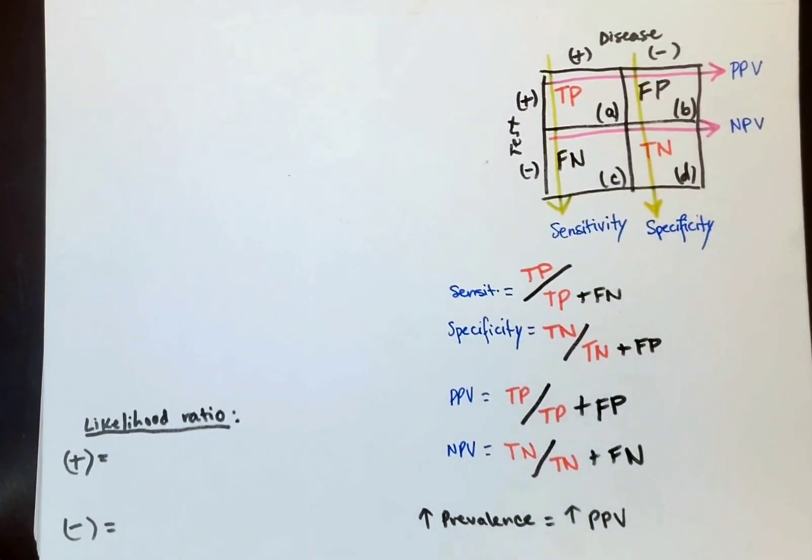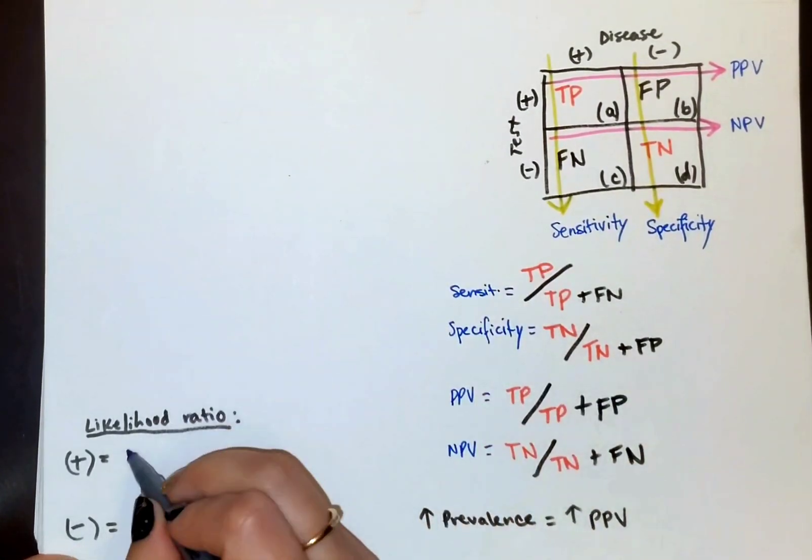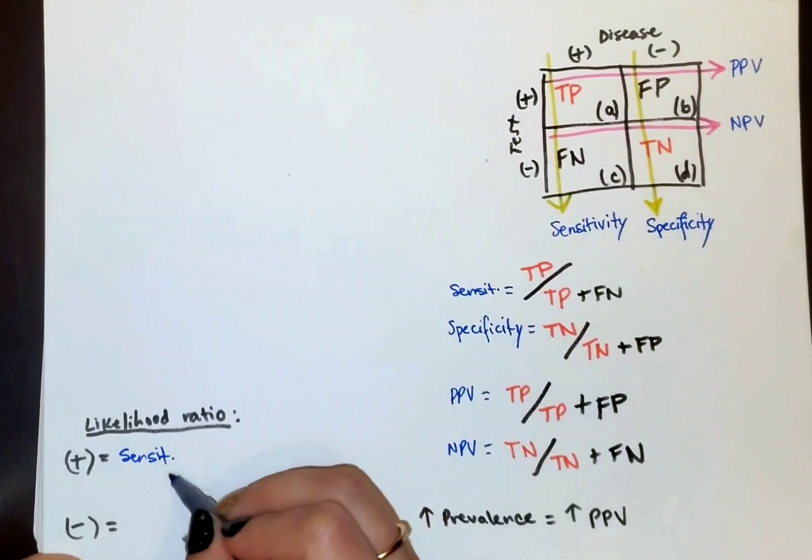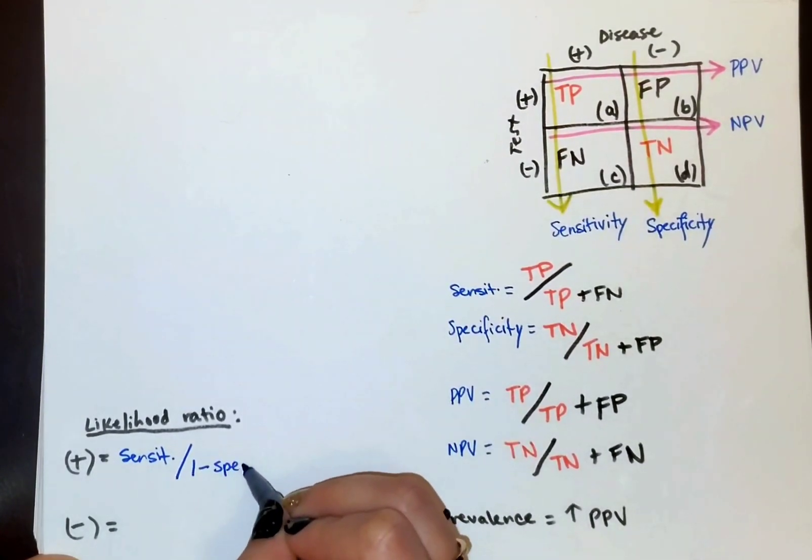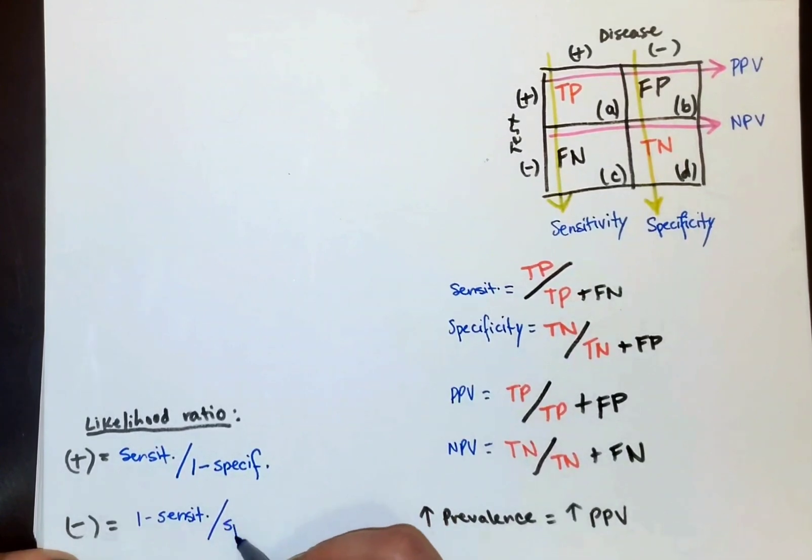So likelihood ratio is going to be the probability of a patient with the disease actually testing positive over the probability of a patient without the disease testing positive. And for this we're going to be doing sensitivity over one minus specificity. In negative likelihood ratio, we're checking the probability of a patient with the disease testing negative over the probability of an individual without the disease testing negative. So we're going to do one minus sensitivity over specificity.